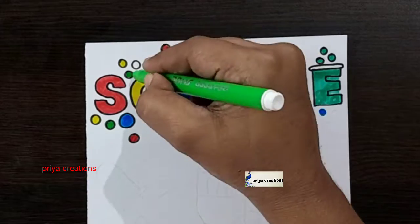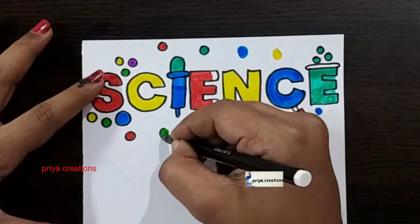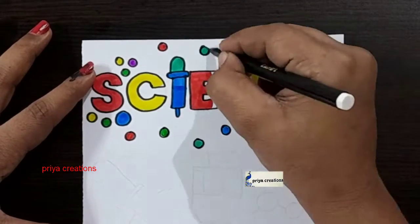Now I am using red color sketch pen. This is green color sketch pen. Draw the round shape like this.